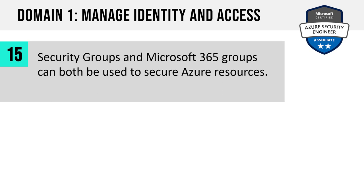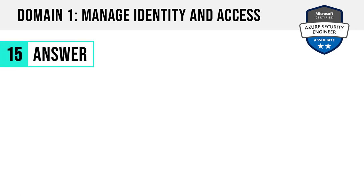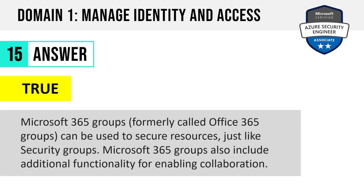Question 15. Security groups and Microsoft 365 groups can both be used to secure Azure resources. True or false? Microsoft 365 groups trigger the creation of additional resources. Can they also be used to secure Azure resources? The answer is true. Microsoft 365 groups, which used to be called Office 365 groups, can be used to secure resources just like security groups, but they also include additional functionality for enabling collaboration.